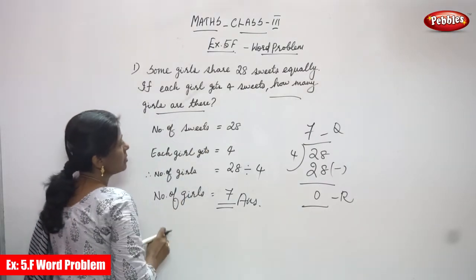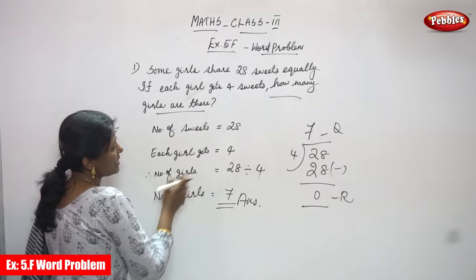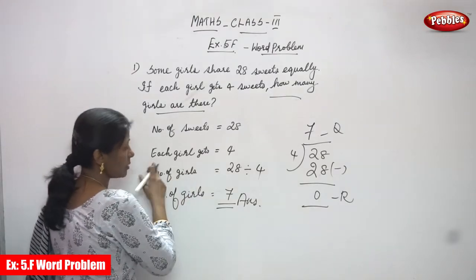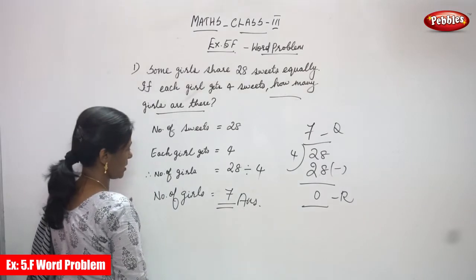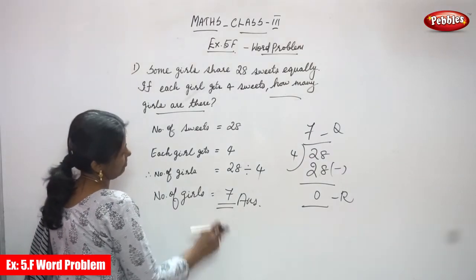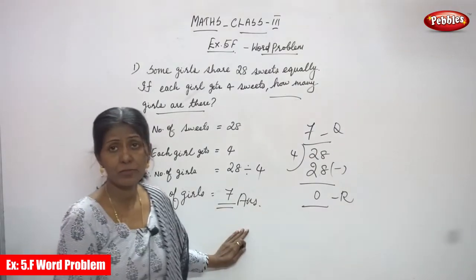So the sweets are equally shared by seven girls. Each girl gets how many sweets? Four sweets. So the total number of girls is seven girls. This is the right answer for the question.